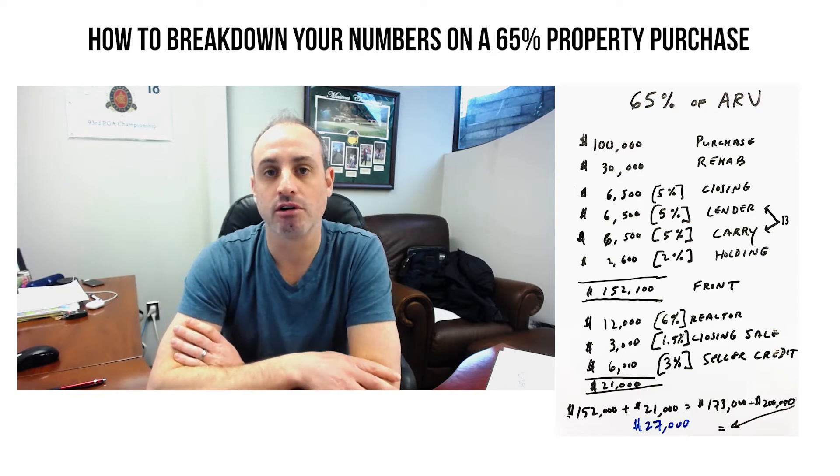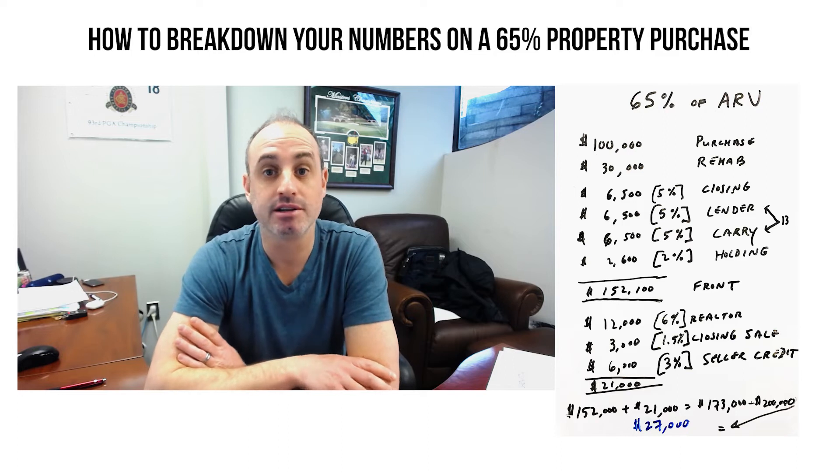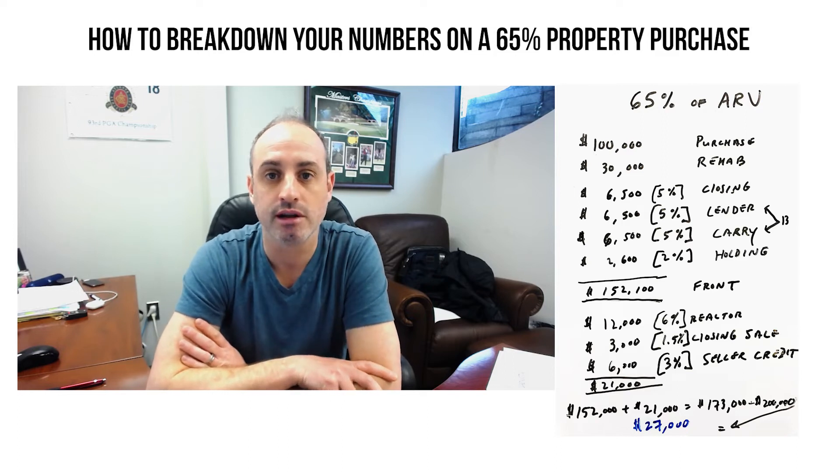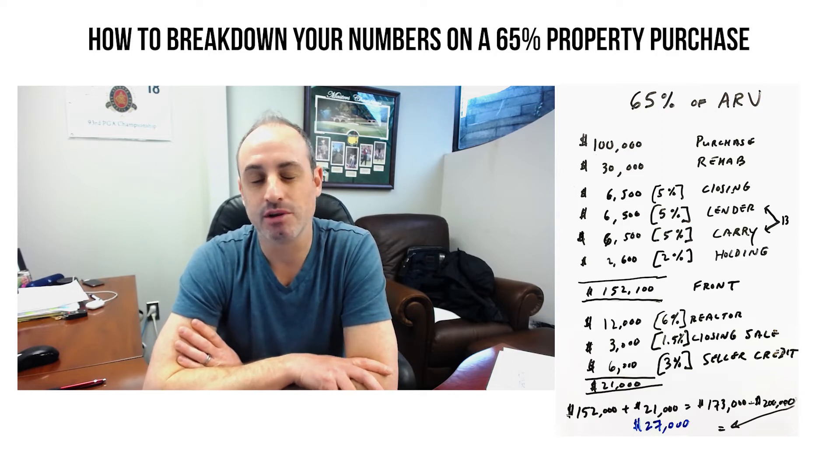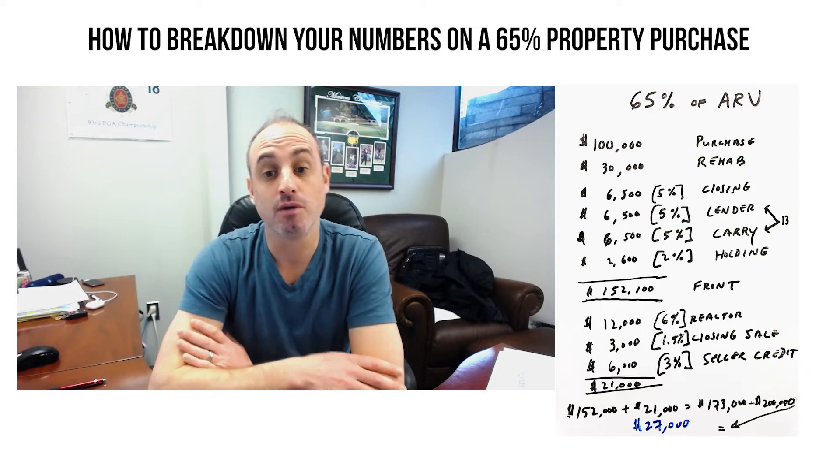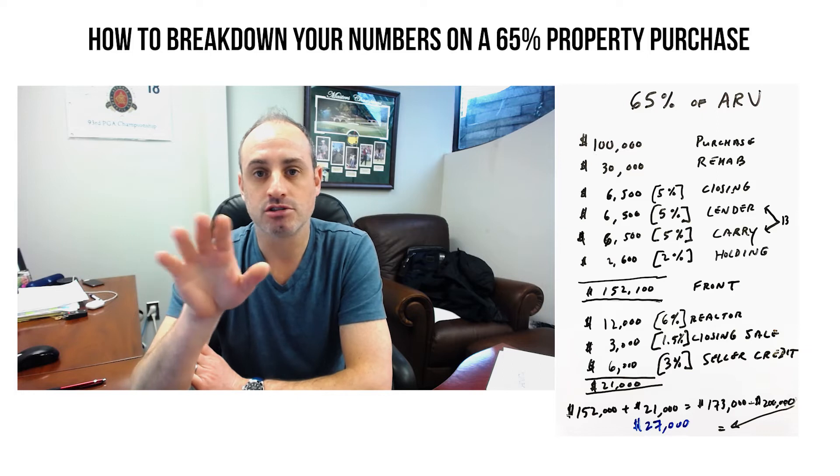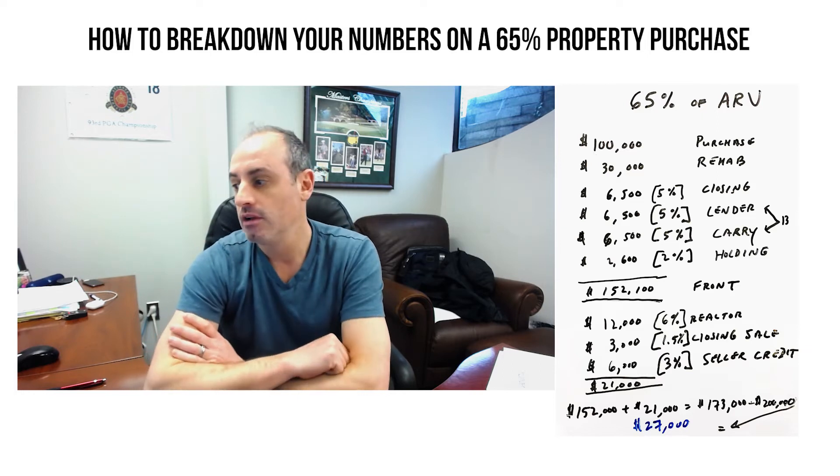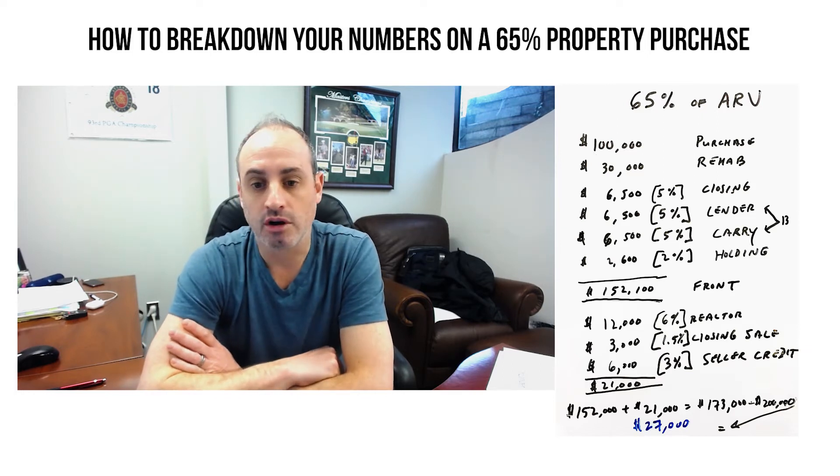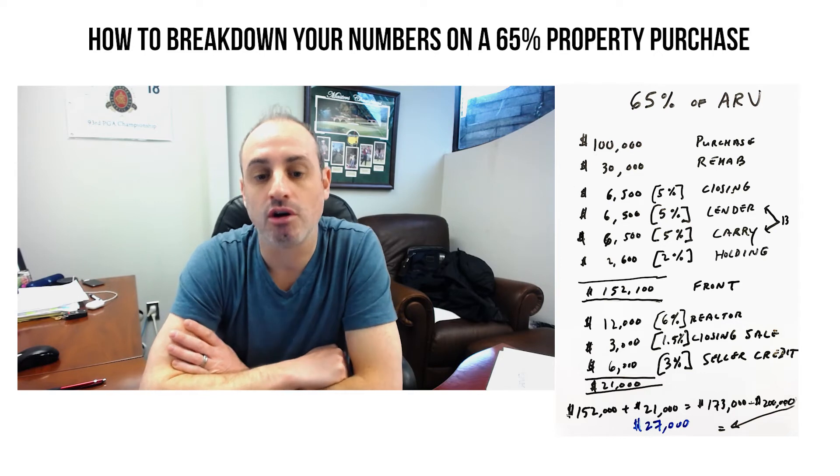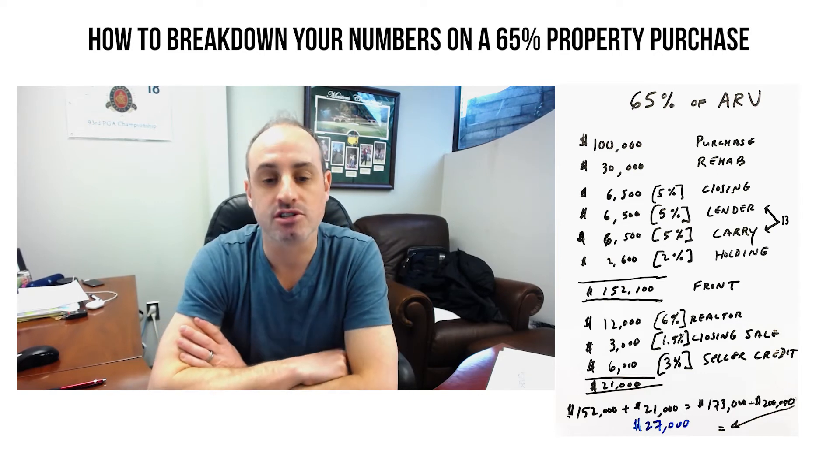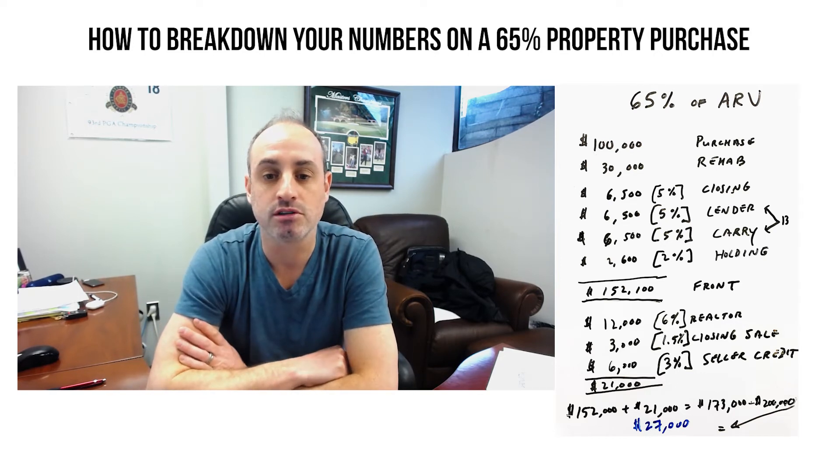If you use bank money, it might be cheaper, private money might be cheaper, whatever the case is. And then you have holding costs. Holding costs are like utility bills, maybe additional insurance that you didn't pay for on the front end. We like to estimate 2%. So hopefully that breaks all those costs down. Those holding costs have nothing to do with the lender.